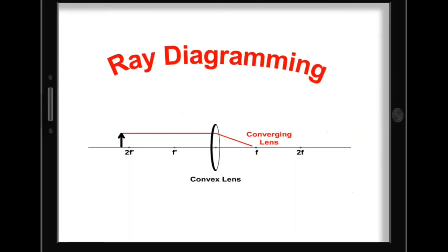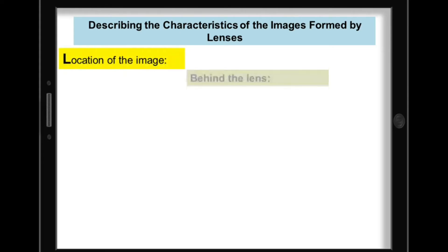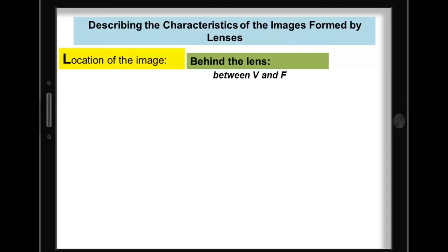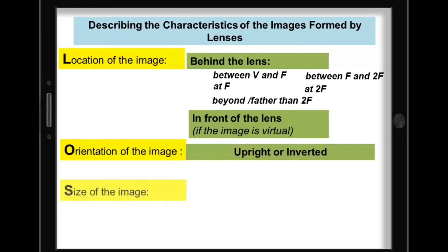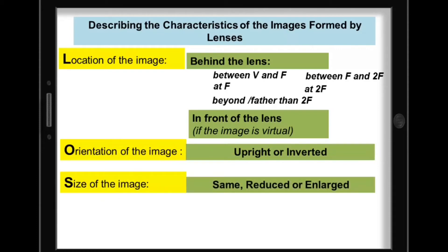Let's use the three useful rays in ray diagramming to describe the images formed by lenses. Before we do the ray diagramming, here are some terms you can use to describe the image. To describe the location: if the image is located behind the lens or in front of the lens. For the orientation: upright or inverted. For the size: same, reduced, or enlarged. And for the type of image: real image or virtual image.